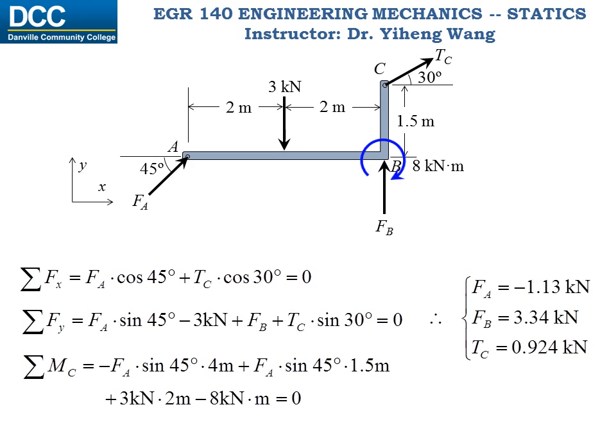Note that the calculated FA is negative. This means the direction of the force at collar A is opposite to what we originally assumed.